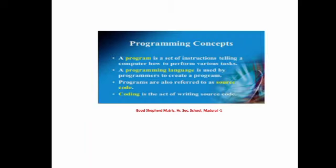A program is a set of instructions telling a computer how to perform various tasks. Programming Languages are used by the programmer to create a program. Programs are also referred to as source code. Coding is the act of writing source code. So we now know the key terms involved in programming: the meaning of program, programming language, source code, and coding.